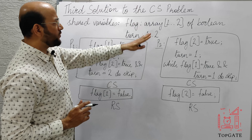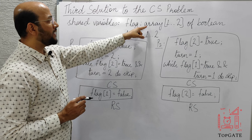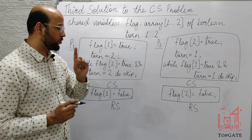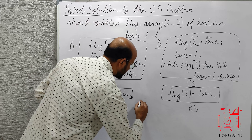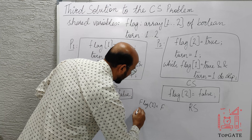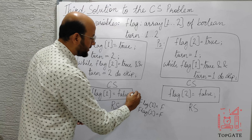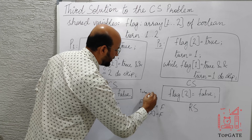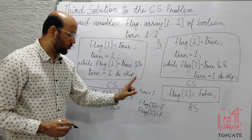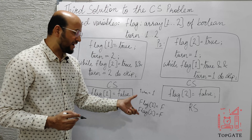We have two shared variables: flag and turn. We assume that initially, both flag values are set to false — that is, flag[1] is false and flag[2] is false. Turn can have any value; we'll let it be 1. So initially, turn is 1, flag[1] is false, and flag[2] is false.